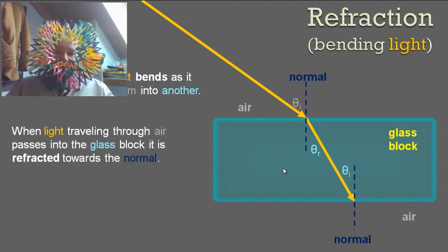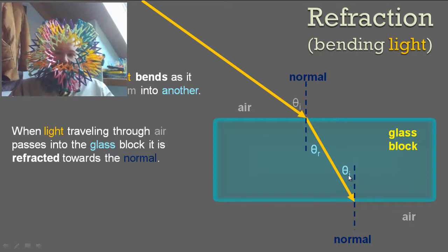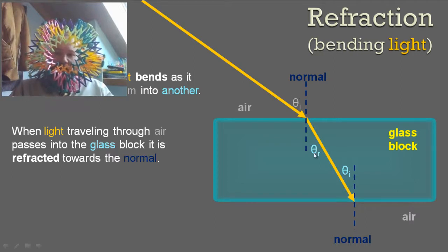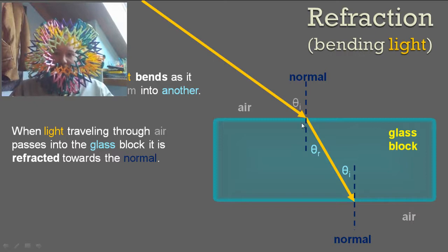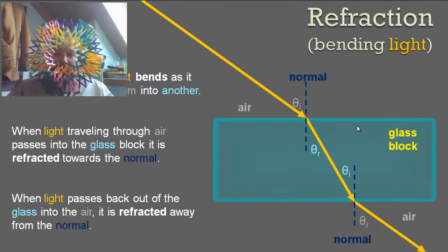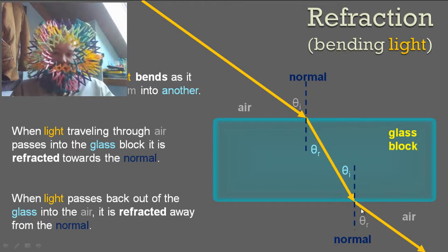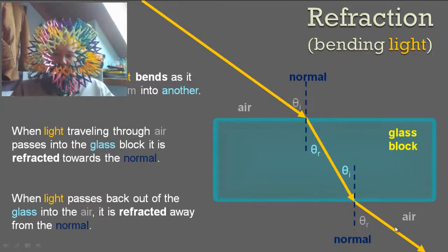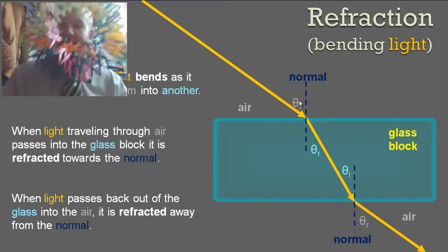You draw in another normal line, and now this is going to be your new incident angle. So this incident angle and this refracted angle are the same because they're both in the same medium. When the angles are not in the same medium, they're going to be different. When light passes back out of the glass into the air, it is refracted away from the normal line. So this time it's going back into the air, it speeds up. So this theta r is bigger than this theta i, but this theta r and this theta i are going to be the same because they are in the same medium.